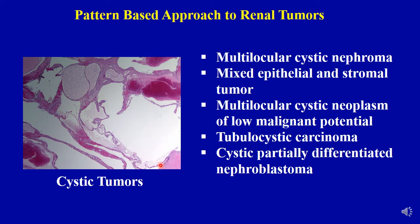Within cystic tumors you have multilocular cystic nephroma and the closely related mixed epithelial and stromal tumor, as well as multilocular cystic neoplasm of low malignant potential. Tubulocystic carcinoma is now better understood — some cases potentially fall into fumarate hydratase-deficient renal cell carcinoma, and this morphology can be seen with many other renal cell tumors, particularly papillary RCC. You can also have cystic partially differentiated nephroblastoma.